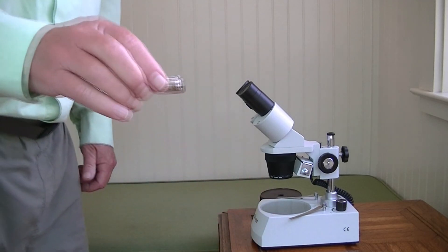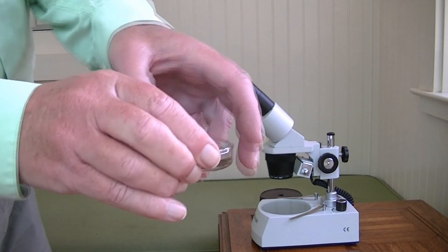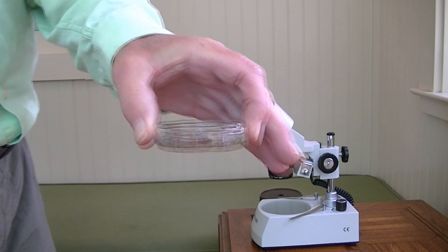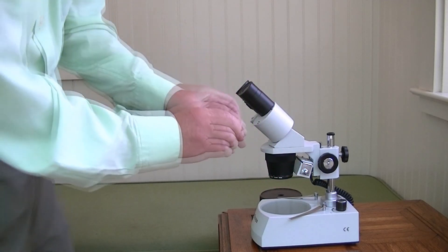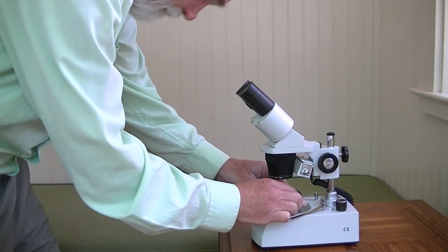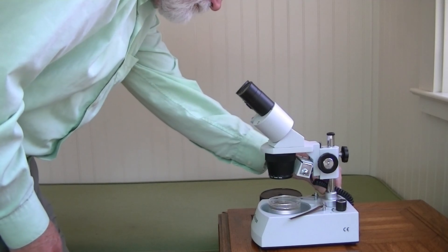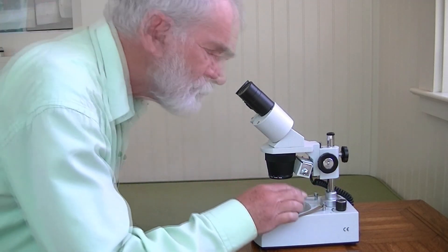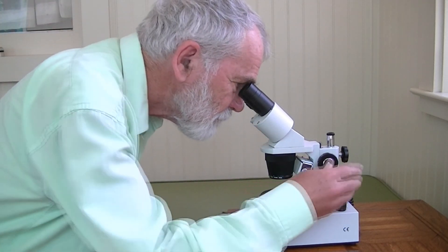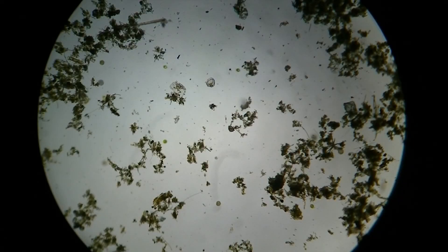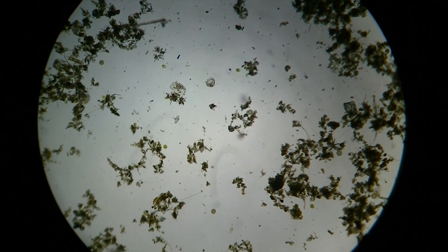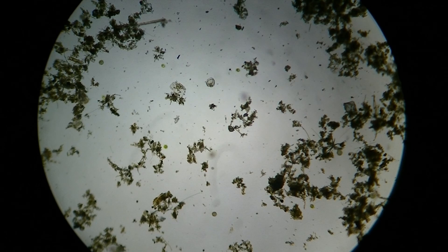I have a sample here of some pond sludge. We'll look at bright field first. I see brown sludge with a few microbes swimming around, but you see there's a very bright background in this mode of illumination.